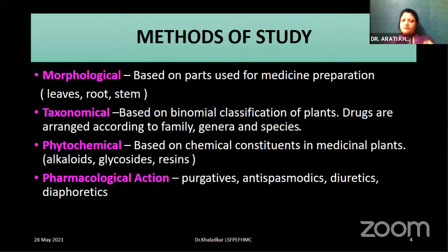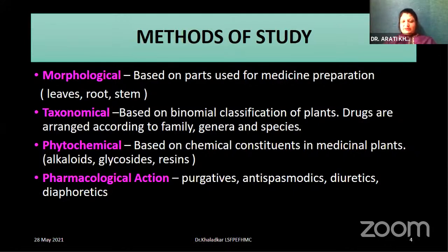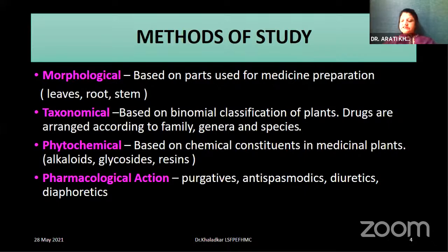There are four important methods of study. First is the morphological, then the taxonomical, the phytochemical, and the pharmacological action. Morphological is based on the parts used for medicine preparation, like leaf, root, and stem. Taxonomical is based upon the binomial classification of plants. Phytochemical — phyto itself means plant — is based on the chemical constituents in the medicine, like alkaloids, glycosides, and resins. Then we have the pharmacological action in the form of purgatives, antispasmodics, diuretics, or diaphoretics. This will be discussed at the last.